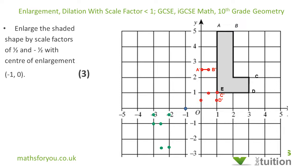For E — starting from the center of enlargement, I move 2 to the right and 1 up. With scale factor one half, I move 1 to the right and a half up. That's E prime. Now joining all the points gives the image after enlargement of the L-shaped diagram by a scale factor of one half.